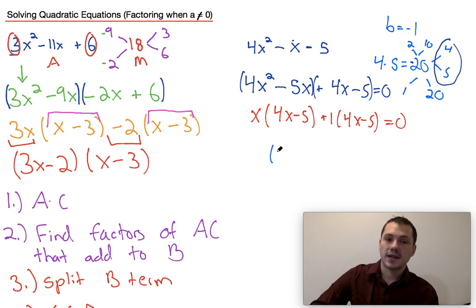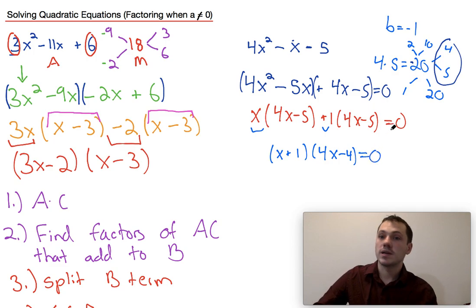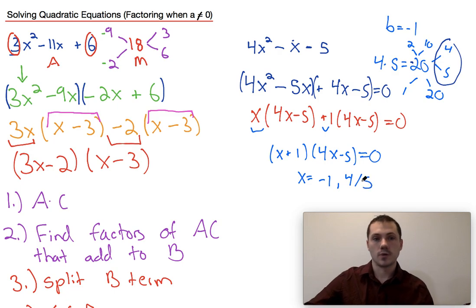And then the final factored form would be x plus 1 bringing this term and this term together in 4x minus 5. And if you wanted to solve it all the way, you would find x is equal to negative 1 or x is equal to 4 fifths. And that's how you solve quadratic equations when your a value is not equal to 1.